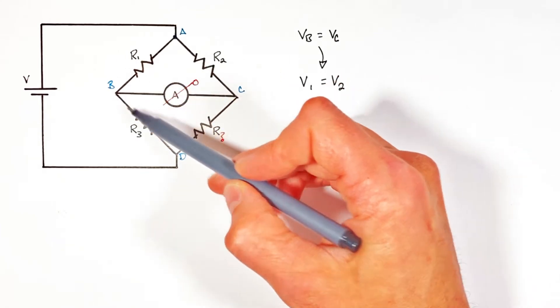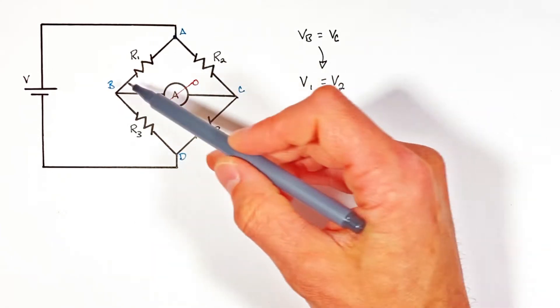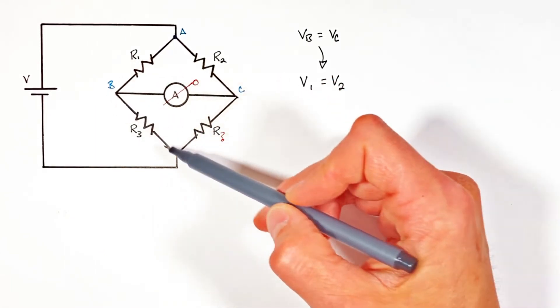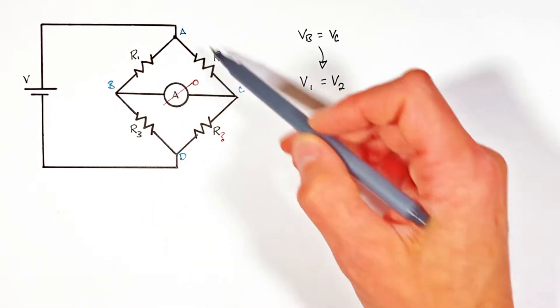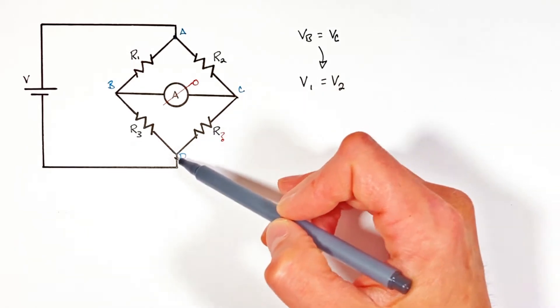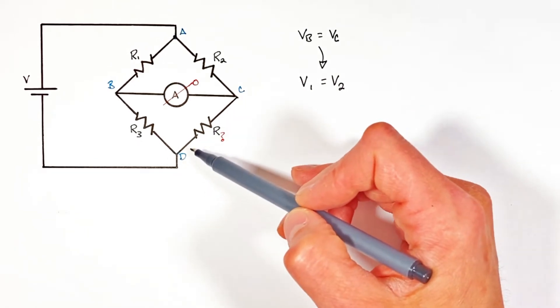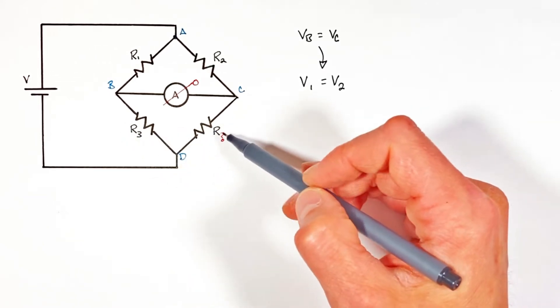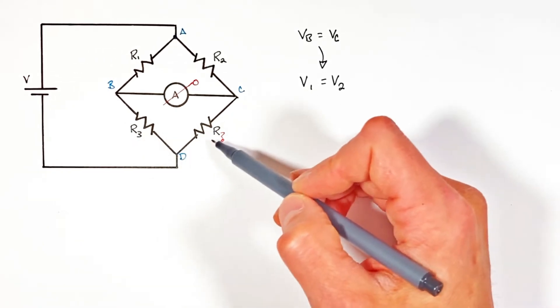Now whether the charge goes to the left or to the right, if it loses a certain amount of potential in going through R1, it's going to lose the rest in going through R3. And if it loses a certain potential in going through R2, it's going to also lose the rest in going through our mystery resistor here. Ultimately that means that R3 and R4, they have to have the same potential across them.